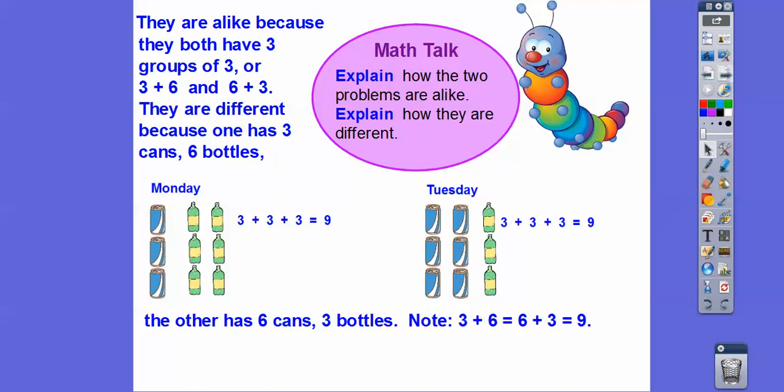And then they're different because one has three cans and six bottles, and the other has six cans and three bottles. So the important part of this lesson is 3 + 6, it doesn't matter if we reverse them and make it 6 + 3. They both equal 9.